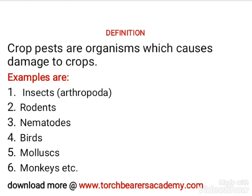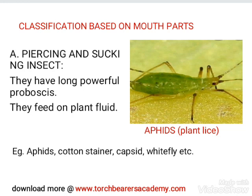What are crop pests? Crop pests are organisms which damage crops. They reduce the yield and quality of food produced by farmers. Examples of crop pests include insects, rodents, birds, nematodes, mollusks, monkeys, bats, and sometimes even man can be classified as a crop pest.